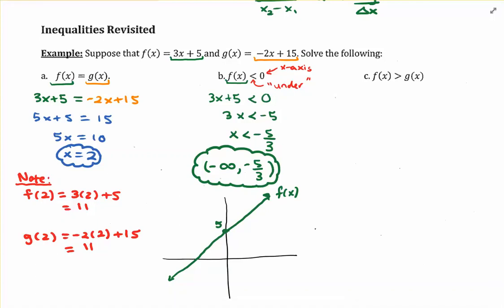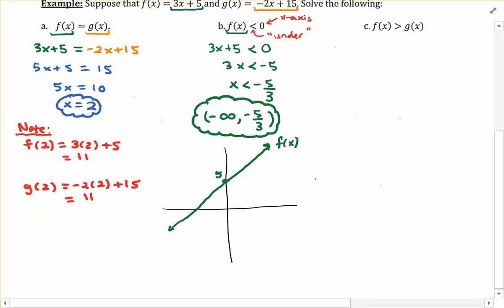What you should notice is that there is a part of the graph of this line that is underneath the x-axis — the piece to the left of the x-intercept. That x-intercept is negative 5 thirds, which is part of our solution in interval notation. The part of the graph of f of x to the left of the x-intercept is entirely underneath the x-axis, so this is the region where f of x is less than 0.